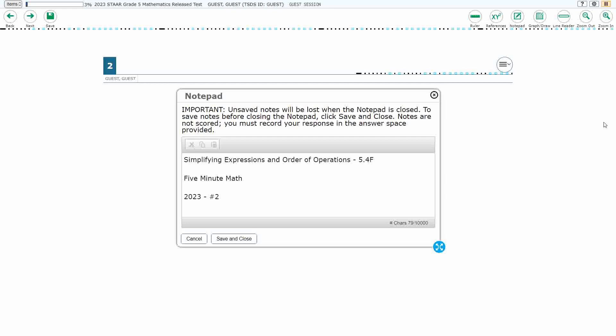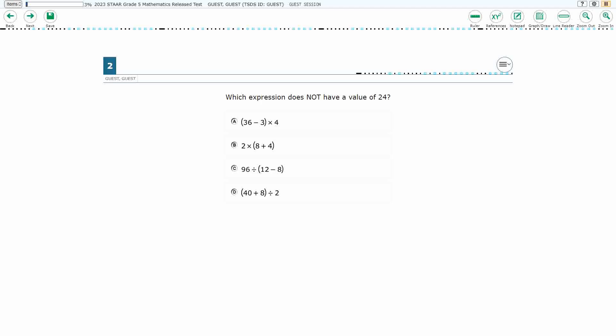Hello, and welcome to 5-Minute Math. Today we are looking at the 5th grade concept of Simplifying Expressions and Order of Operations. This is standard 5.4F in the great state of Texas, and we are using item number 2 of the 2023 released STAAR test.